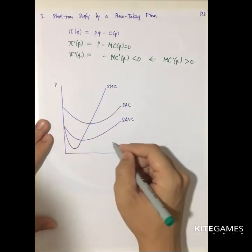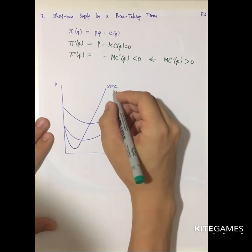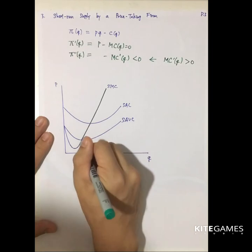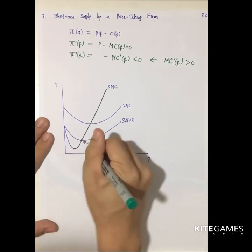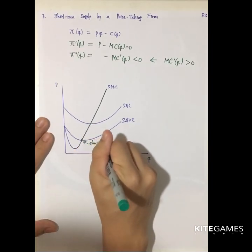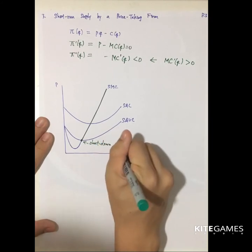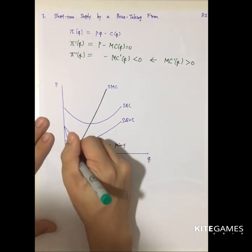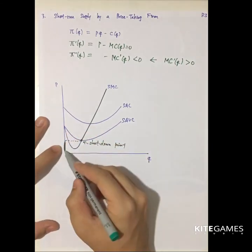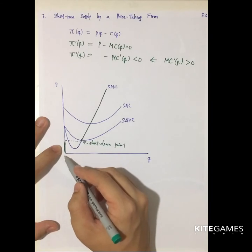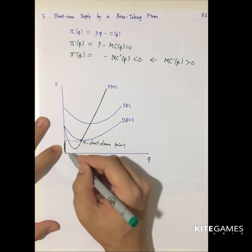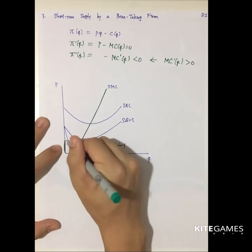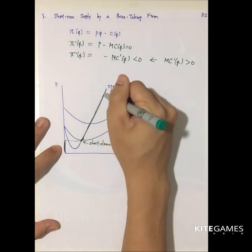For a firm, the supply curve is the short-run marginal cost curve above a certain point. Below this point — called the shutdown point — the firm's supply drops to zero. So the supply curve of the firm follows the short-run marginal cost above the shutdown point, and there is also a zero profit point on this curve.